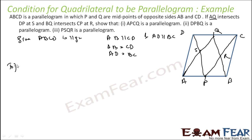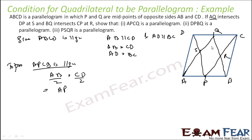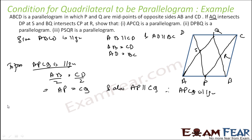Now we have to prove APCQ is a parallelogram. Since AB is equal to CD and P is the midpoint of AB and Q is the midpoint of CD, dividing both by two gives AP equal to CQ. Also, AB is parallel to CD, so AP is parallel to CQ — same line. Therefore, APCQ is a parallelogram.